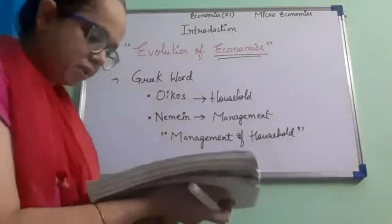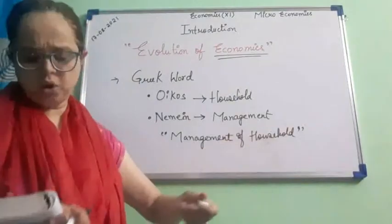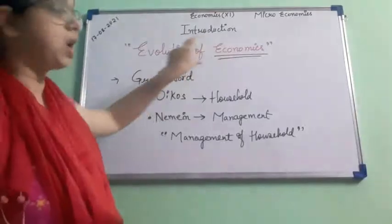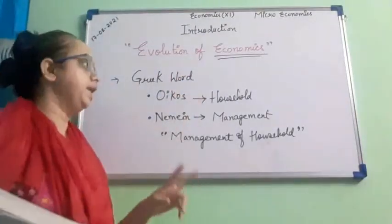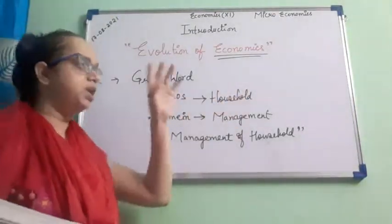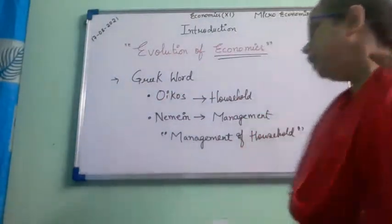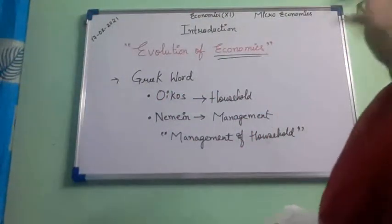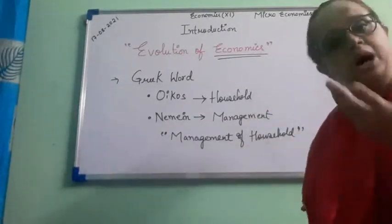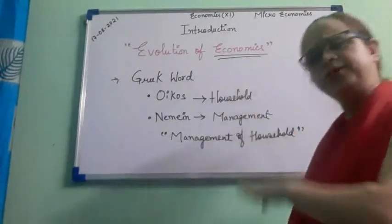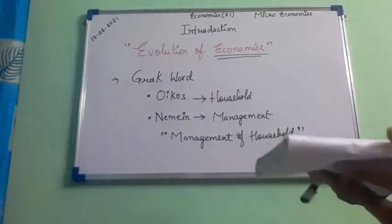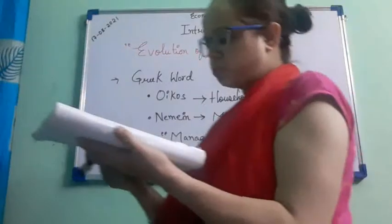The term economics was first used — or coined — by Dr. Alfred Marshall in 1890 in his famous book 'Principles of Economics'. So the term economics came from two Greek words, oikos meaning household and nemen meaning management, and was formally introduced by Alfred Marshall.